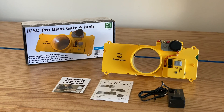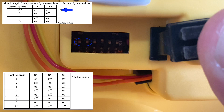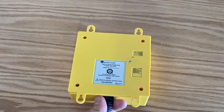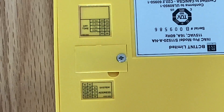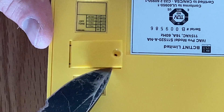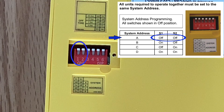I repeat these steps for the second component, the IVAC Pro Blast Gate, setting the system address to A and the tool address to tool 1. The IVAC Pro Switch is a little different in that it doesn't have any tool addresses, just system addresses. I set this to system A, which is the default setting, by ensuring that the first two switches are set to off.